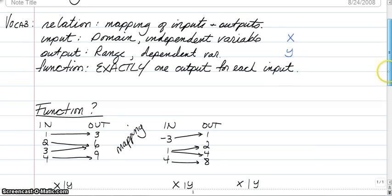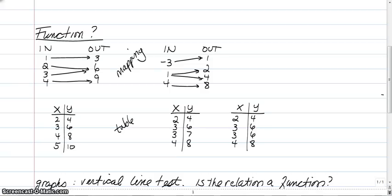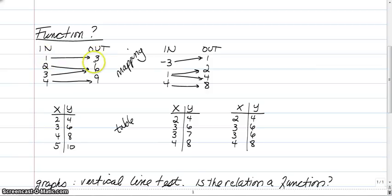There are a couple of ways to look at functions. Mappings list your inputs and outputs and draw arrows between them. Tables — x-y tables or input-output tables — list ordered pairs or coordinates. Looking at the first mapping: plug in 1, get 3; plug in 2, get 6; plug in 3, get 6; plug in 4, get 9. No issues — this is a function. It's fine that both 2 and 3 gave us 6.